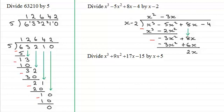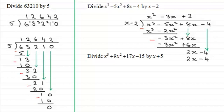Welcome back. So what we do is bring the minus 4 down. What do we multiply x by to give us 2x? Well it's plus 2. 2 times x minus 2 gives us 2x, and 2 times minus 2 is minus 4. If we subtract these we see they're exactly the same, giving us 0 — no remainder. That also tells us that x minus 2 is a factor of x cubed minus 5x squared plus 8x minus 4, because it goes in exactly with no remainder.